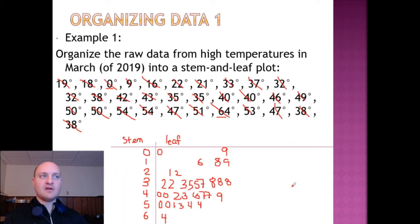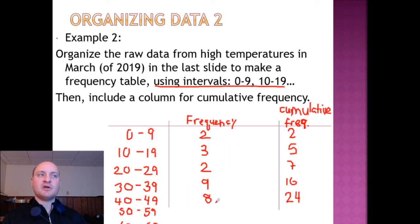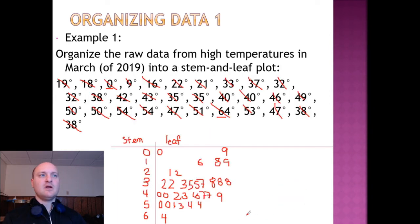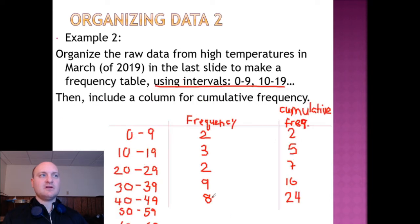From 40 to 49, we have another 8 values. So we'll put 8 in the frequency and our cumulative frequency rises to 24. In 50 to 59, we have another 6 values. So our frequency is 6, and our cumulative frequency is 30.